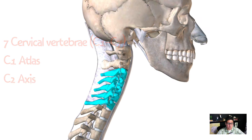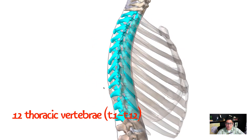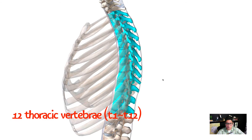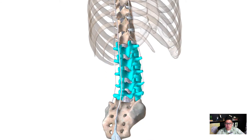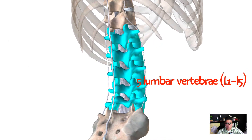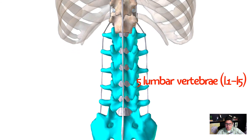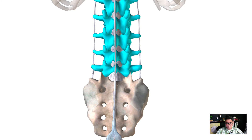Just below the cervical vertebrae you have the thoracic spine, T1 through T12. The thoracic cage — your ribs — attaches to those vertebrae, T1 through T12. Just below that is the lumbar spine, L1 through L5, which is five vertebrae. And below the lumbar is the sacrum, which consists of five fused vertebrae. On occasion, about 1 in 20 people will have the first sacral vertebra fail to fuse, resulting in six lumbar vertebrae instead of five.